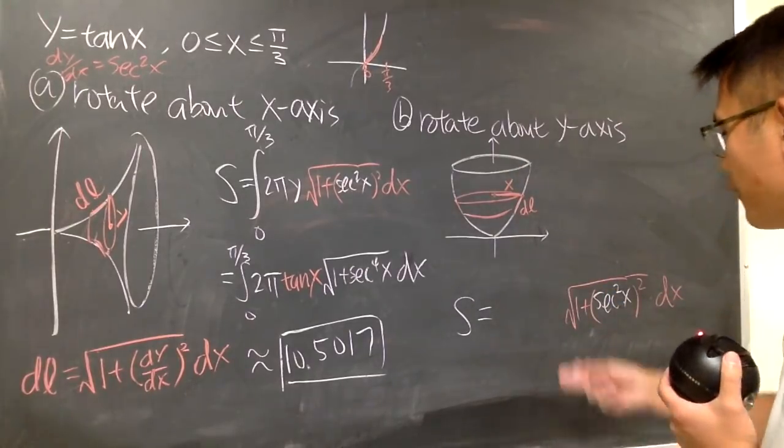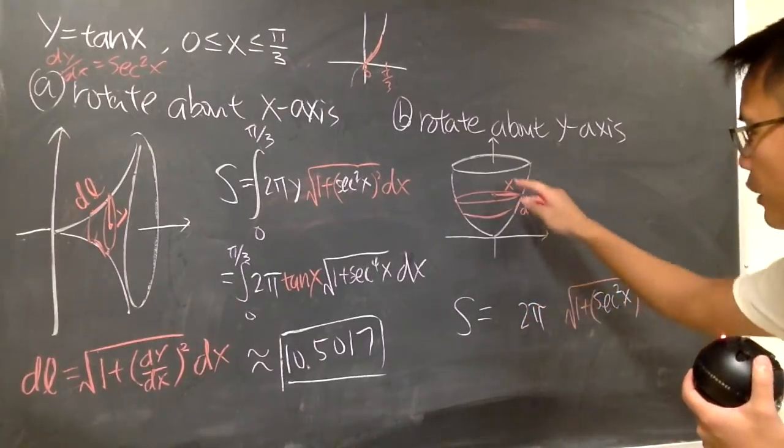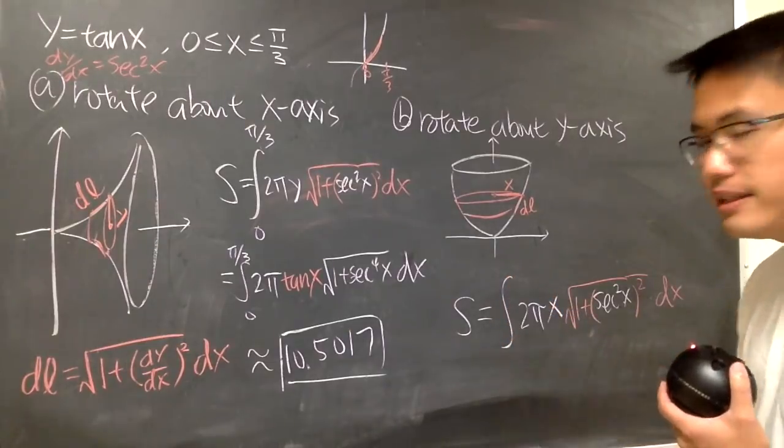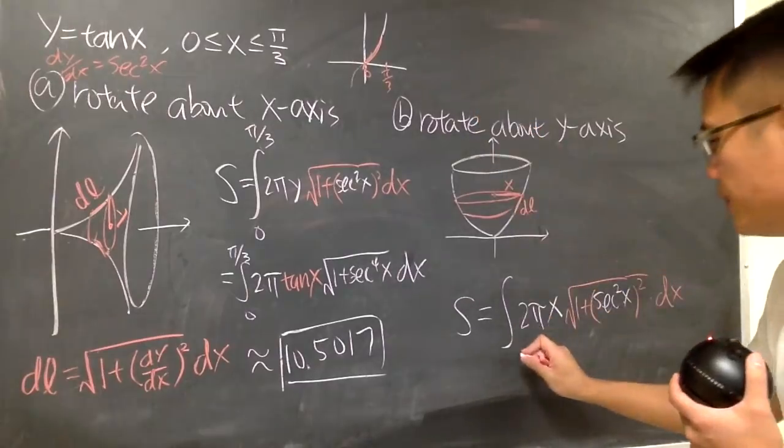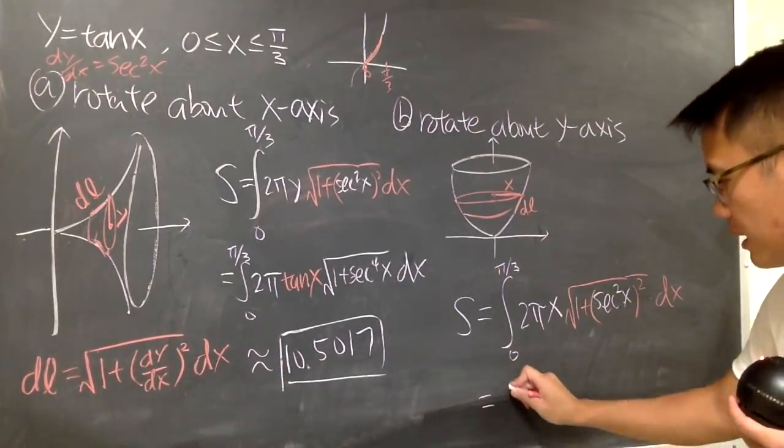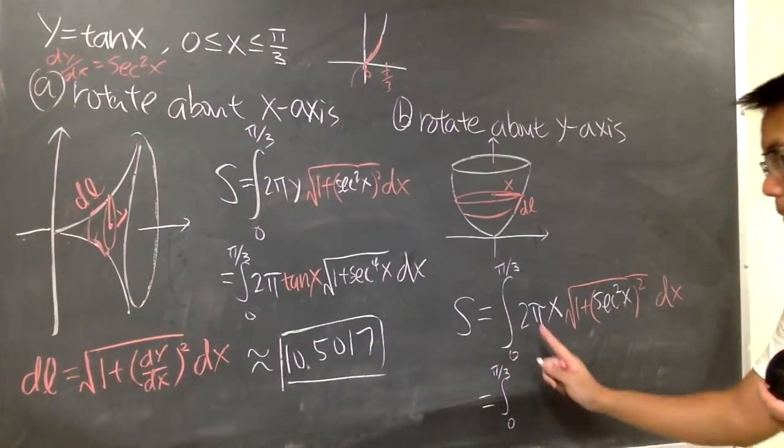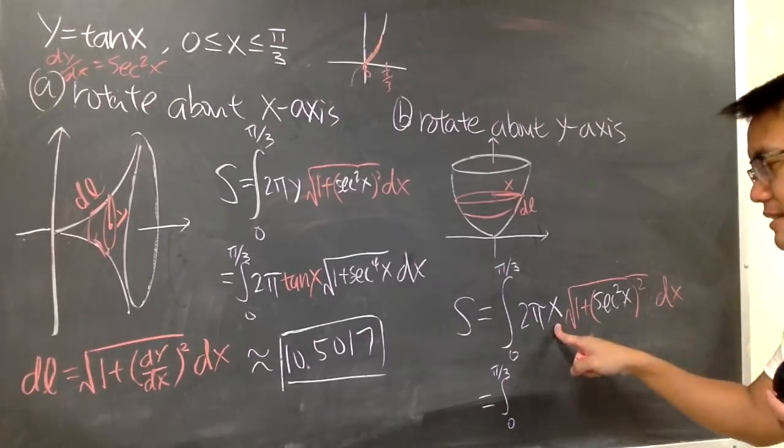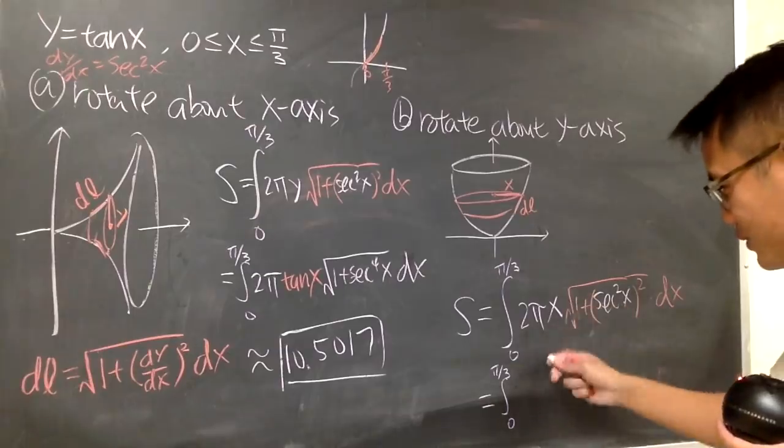So the formula for this right here is 2 pi, the radius is x right here. And you still integrate, because you are in the x world, so you go from 0 to pi over 3. And I will just write this down real quick for you guys. This is the integral from 0 to pi over 3. Well, you see here, you are in the x world, and this is x, so x is good. This is good. I will just keep it as how it is.